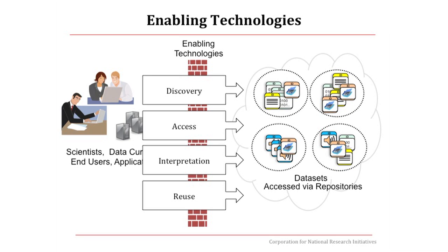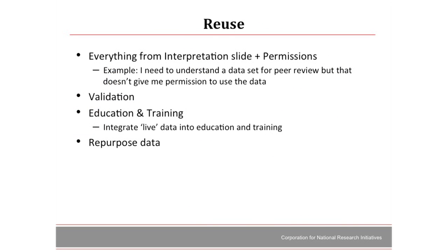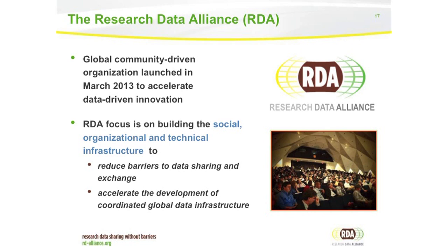Then you get to reuse, which is the goal of all this. We find the data, we can get it, we can understand what it means, now we want to do something with it. That's everything we just said plus permissions — just because you understand the data doesn't mean you can reuse it. You need to be able to validate it, and a nice use of reuse anyway is integrating live data in education and training. Then we want to repurpose the data. Those are some technological issues. The social and organizational issues are at least as tough, probably tougher.